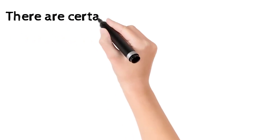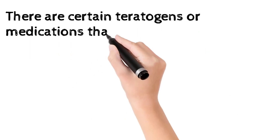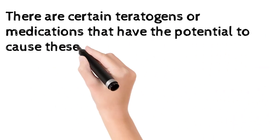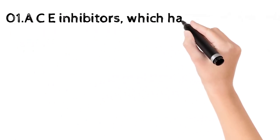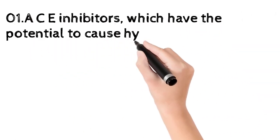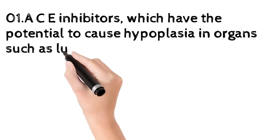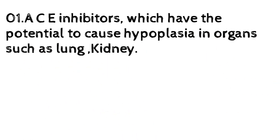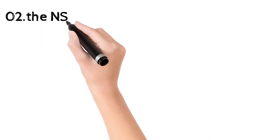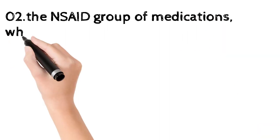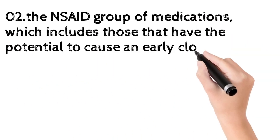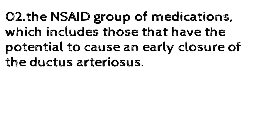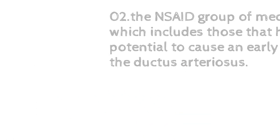There are certain teratogens or medications that have the potential to cause these abnormalities. Number 1, ACE inhibitors, which have the potential to cause hypoplasia in organs such as the lung and kidney. Number 2, the NSAID group of medications, which includes those that have the potential to cause an early closure of the ductus arteriosus.